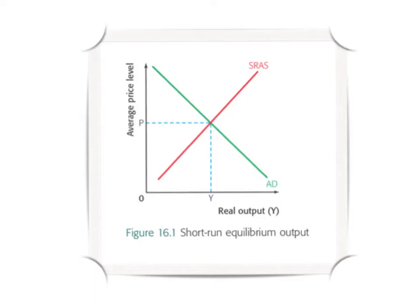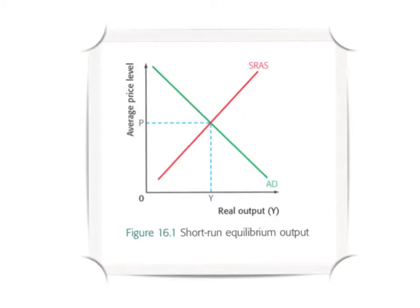The economy is in short-run equilibrium where aggregate demand equals short-run aggregate supply, producing an output level of Y and a price level of P. The output produced is exactly equal to total demand, so there's no reason for producers to change their level of output. There's no upward or downward pressure on the price level — no inflation, no deflation — and therefore nothing changes unless we shift aggregate demand outward or aggregate supply shifts outward or inward.